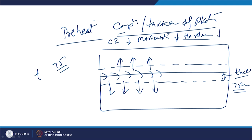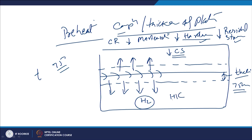Reduction in cooling rate reduces the martensitic transformation tendency, which in turn decreases the hardness of both the weld metal and heat affected zone. Reduced hardness also reduces the residual stresses developed in the weld and heat affected zone. All these effects are favorable for reducing cracking sensitivity. Preheating controls the cracking tendency and embrittlement. If these steels experience inappropriate cooling rates leading to martensitic transformation, high hardness, and high tensile residual stresses, they become susceptible to hydrogen assisted cracking.